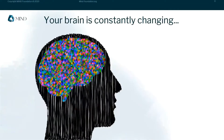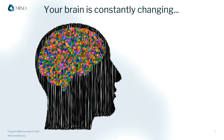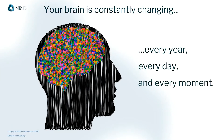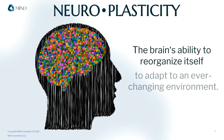Your brain is a dynamic and constantly changing organ. It is not the same now as it was one year ago. In fact, it's not even exactly the same now as it was one minute ago. Your brain has a property called neuroplasticity, which means its ability to reorganize itself and adapt to an ever-changing environment.